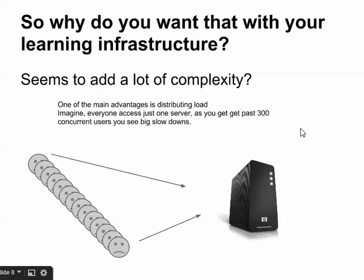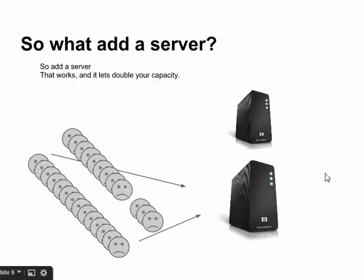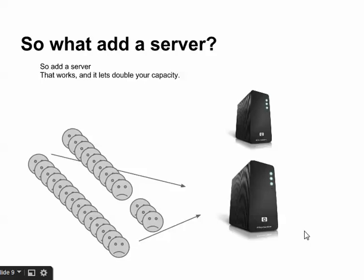The main advantage for adding this complexity is that as you get up to higher numbers of students, you're going to see a big slowdown. If 300 people are all accessing one server at the same time, the server won't be able to handle that load, so we have to add a second server anyway and distribute the load for the additional 300 people. Now we have approximately 600 people able to access our servers at any one time. We could just keep adding server after server until our capacity is as high as we need it to be.